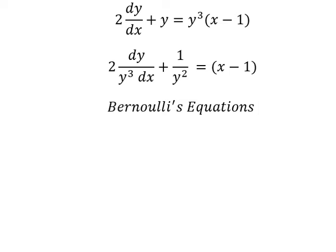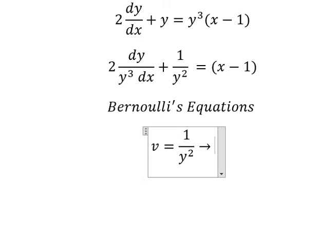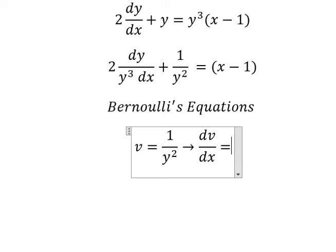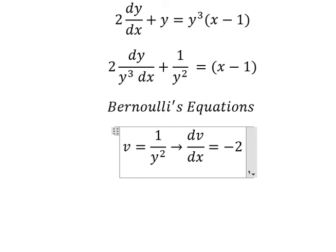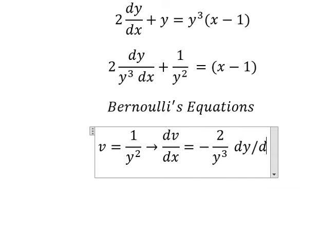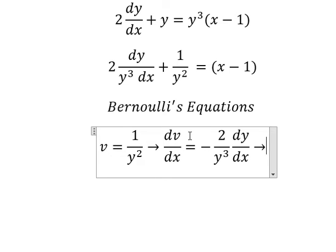So I will put v equals to 1 over y squared. After that, we differentiate both sides. And we have negative 2 over y to the power of 3, dy over dx. Because we don't have the negative side in here, so I will move this one to the left.